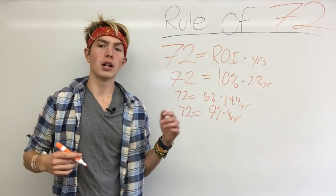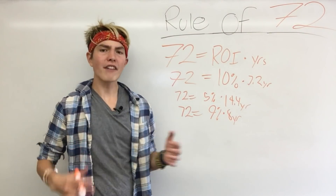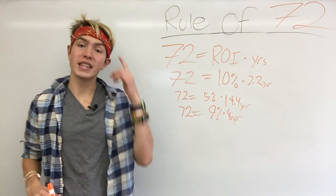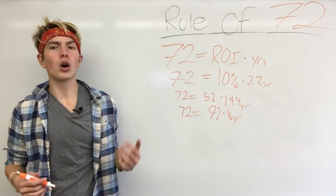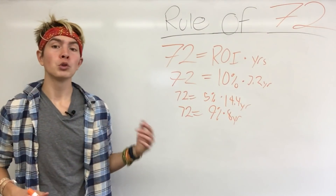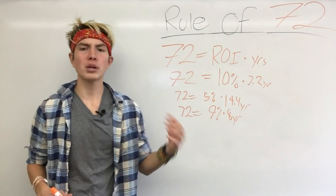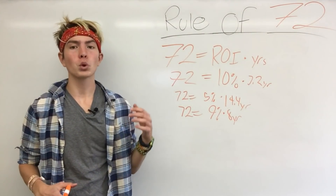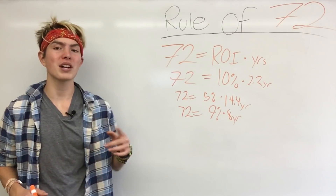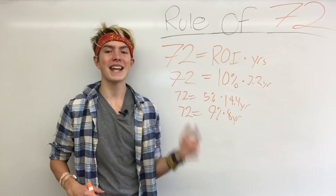Pretty straightforward, pretty simple rule that you can keep in your back pocket. If somebody's talking about a 5% rate of return, you can just think in your head: okay, it's going to take just about 14 and a half years to double with this rate of return. A pretty good way to look smart and make educated estimates when you're talking money with somebody else. You'll be able to impress a lot of your friends if you've got the rule of 72 down pat.